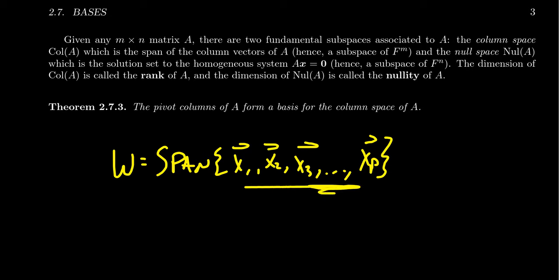But this spanning set might not be independent. It could be that some of the spanners are actually linear combinations of the other spanners, and therefore we could throw them out without changing the span. Like maybe we get rid of x2, x3, and we keep all the rest. We could always prune down a spanning set. We could always prune it down to a minimal spanning set to make a basis. This means throwing out the vectors which are unnecessary.